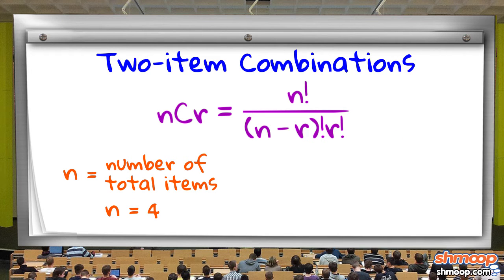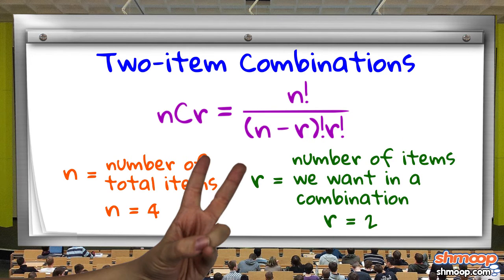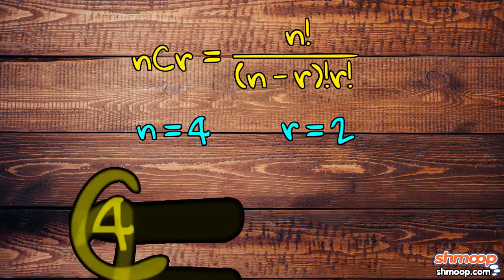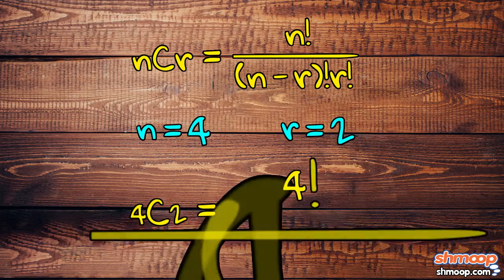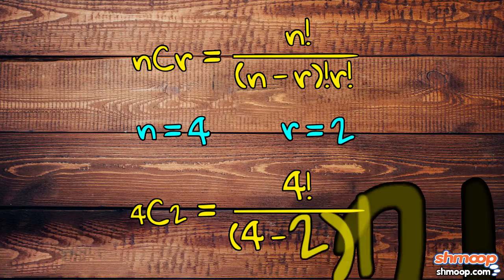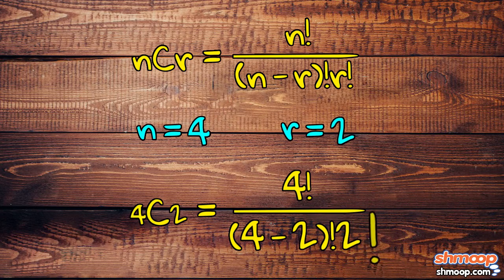Here, n is the number of total items we have, which in this case is four, and r is the number of items we want in a combination. So now let's plug in what we know: 4 choose 2 equals 4 factorial over 4 minus 2 factorial times 2 factorial.